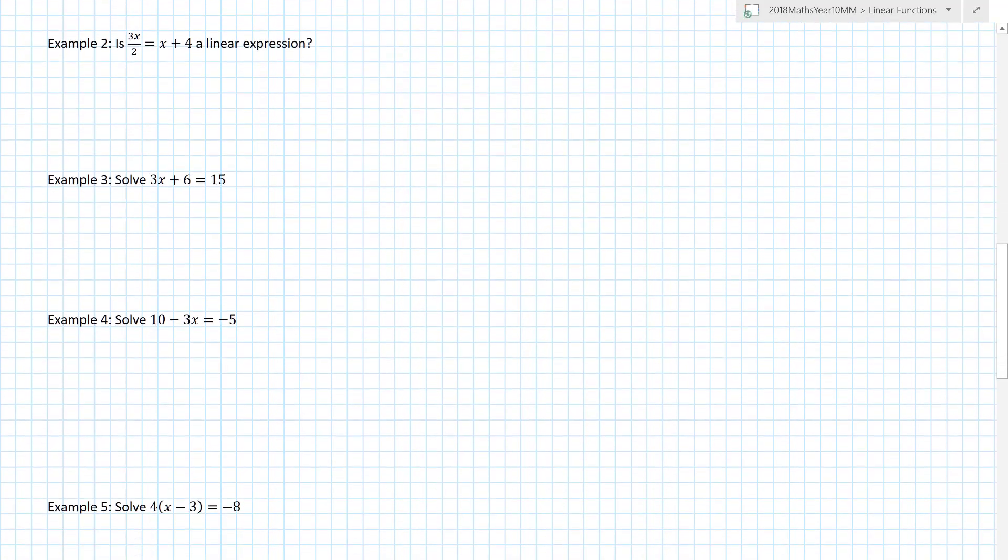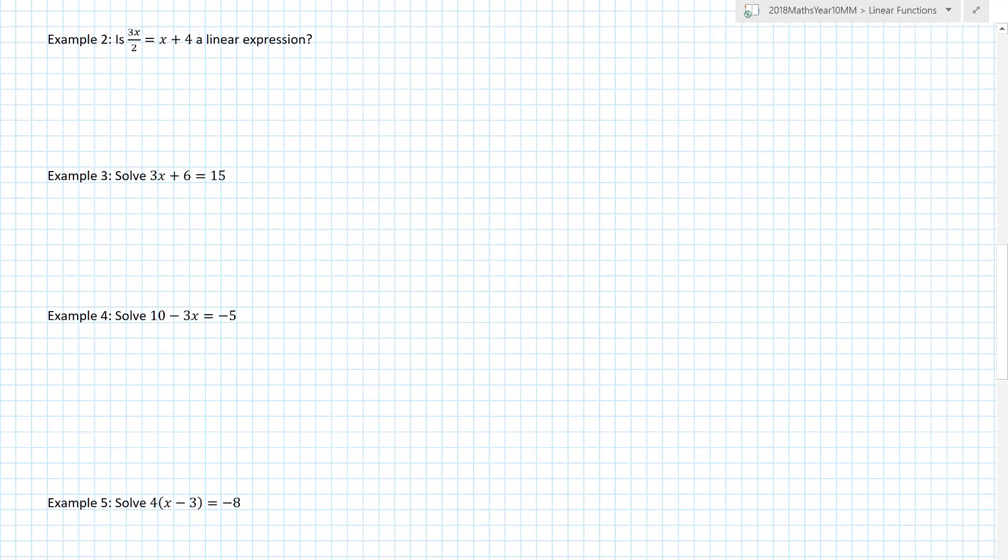Example 2: Is 3x over 2 equals x plus 4 a linear expression? I'm going to ignore the word expression because it's got an equal sign. If we have 3x on 2 equals x plus 4, for it to be linear, the highest floaty power is 1. There's a floaty one there and a floaty one there.